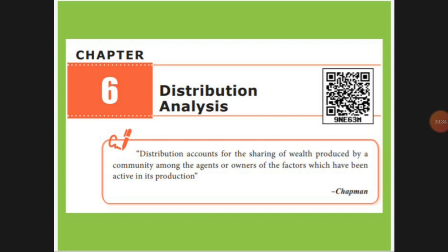Next, if you are having capital — money — and you are investing in the firm, you have to get interest along with the amount you have invested. Next, the entrepreneur: if an owner is starting any business, he should get a profit. So these are the four factors and how income is distributed among them.